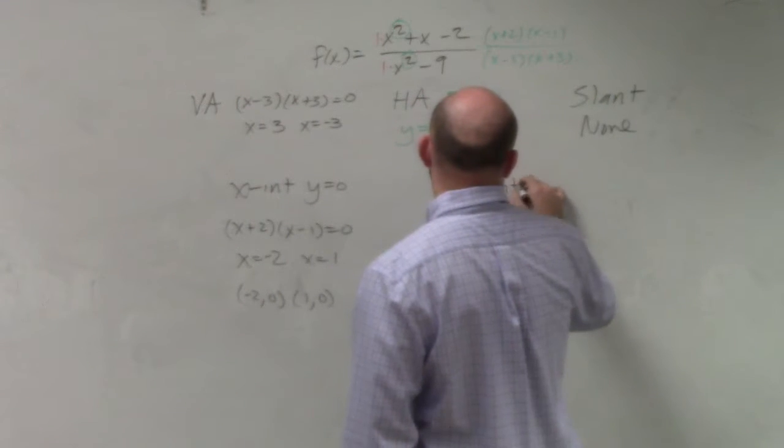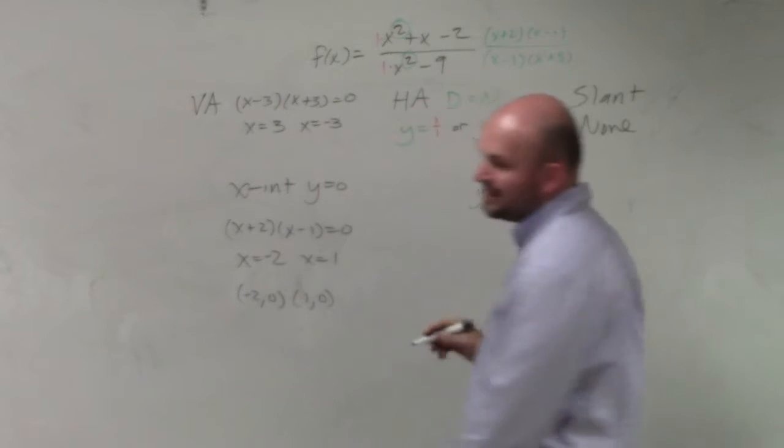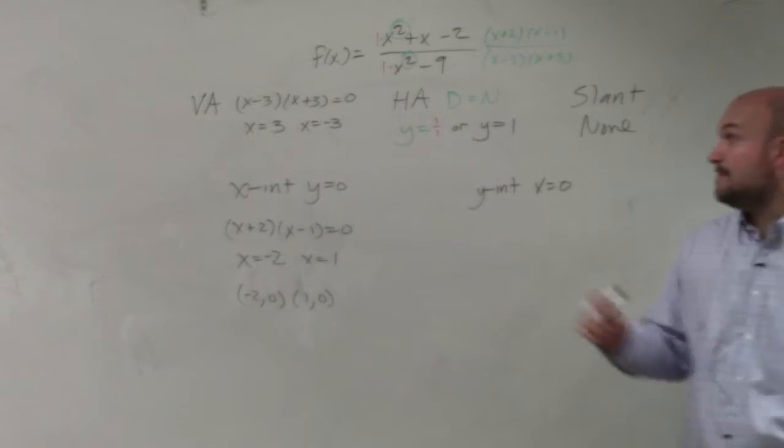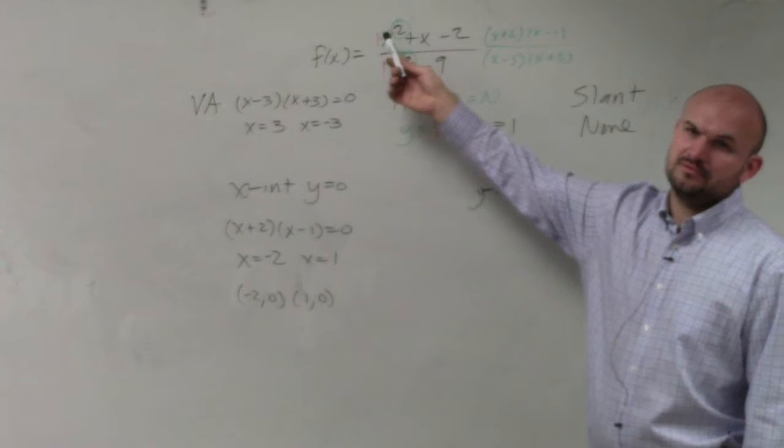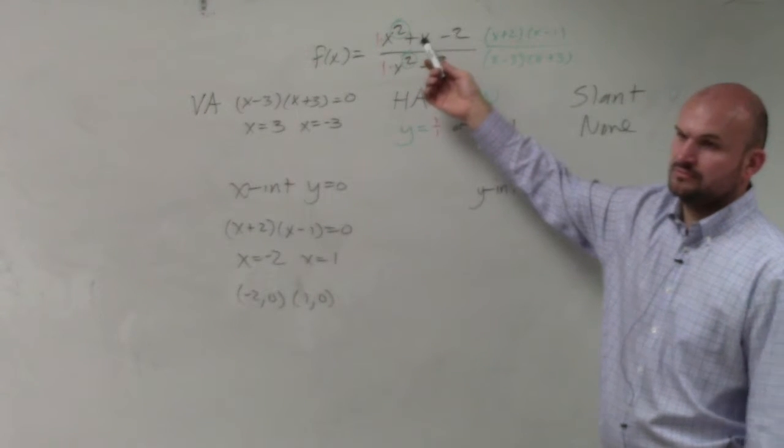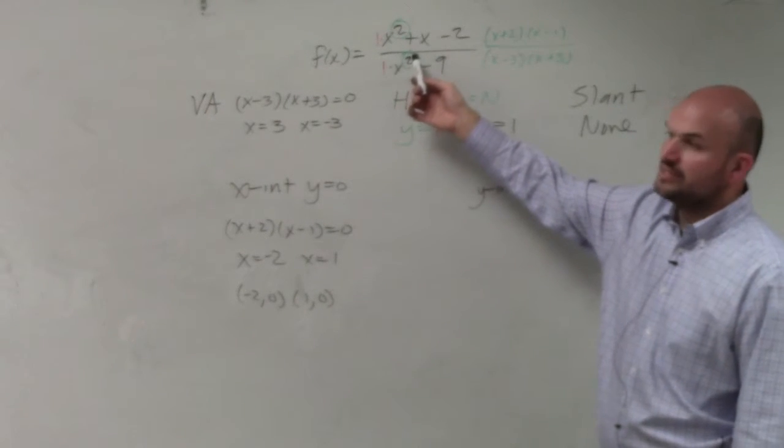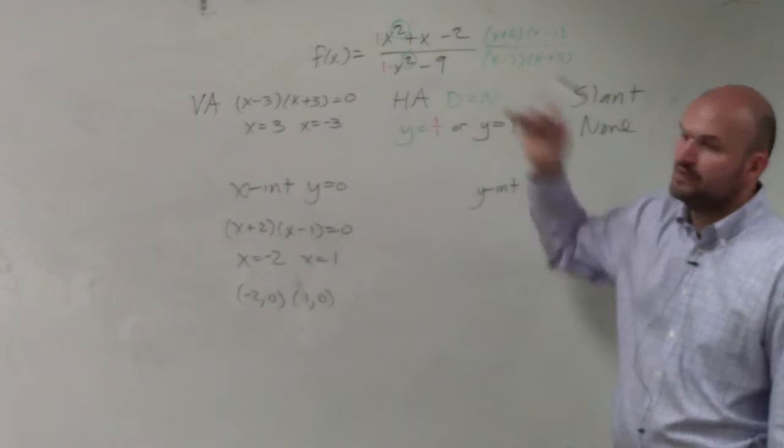To find the y-intercept, x equals 0. I'm going to save some time on this problem. Rather than plugging in 0, what's 0 squared? 0. What's 0 times 0? 0. What's 0 squared? 0. So in reality, I have negative 2 over negative 9, which is 2 9ths.